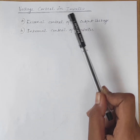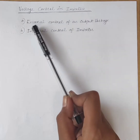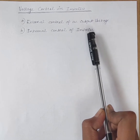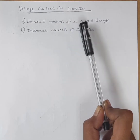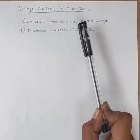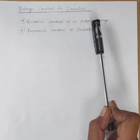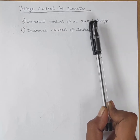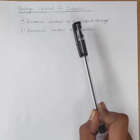The various methods for the control of output voltage of inverters are: external control of AC output voltage, and internal control of inverter. In the case of external control of AC output voltage, a voltage controller is inserted between the output terminals of the inverter and the AC load terminals. The voltage input to the AC load is controlled by controlling the firing angle of the AC voltage controller.